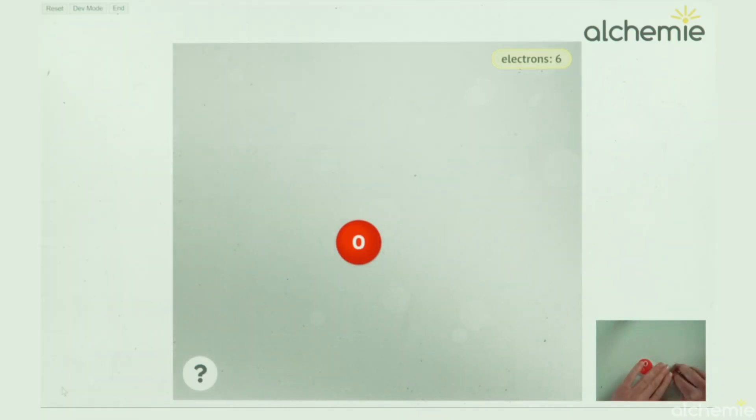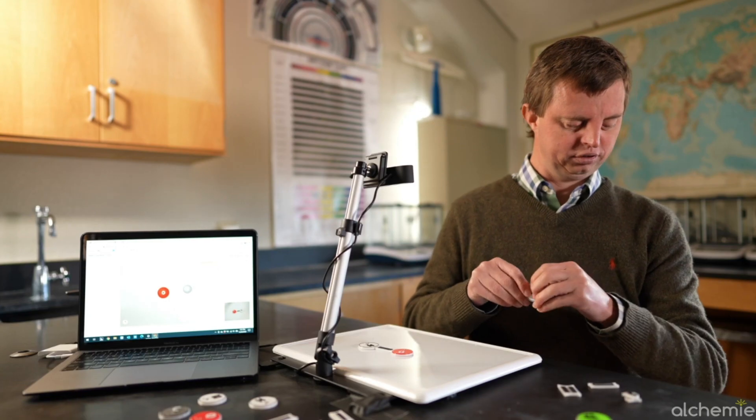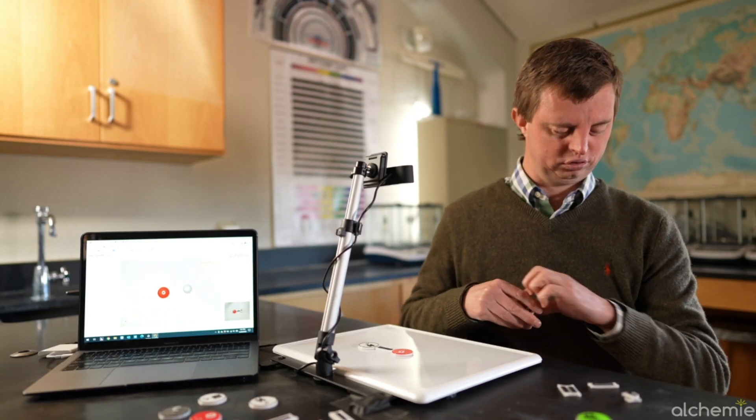Now I'm single bonding a hydrogen to it, again, just like a sighted student would do when drawing. Added to board. Hydrogen. Hydrogen bonded to oxygen. The electron count is five.